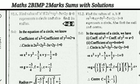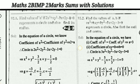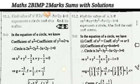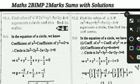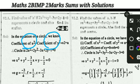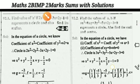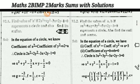Next question: find the value of 'a' if the equation 2x² + ay² + ... represents a circle, and find its radius. The condition for an equation to represent a circle is that the coefficient of x² equals the coefficient of y². Here the x² coefficient is 2 and the y² coefficient is a, therefore a = 2. Then find the radius value.